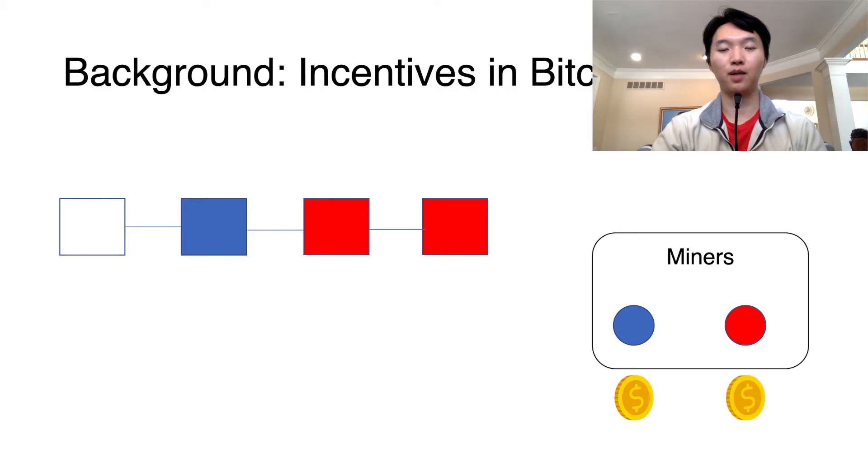In this example, the first blue block starting from the left and the two red blocks are rewarded. But the second blue block is not rewarded.